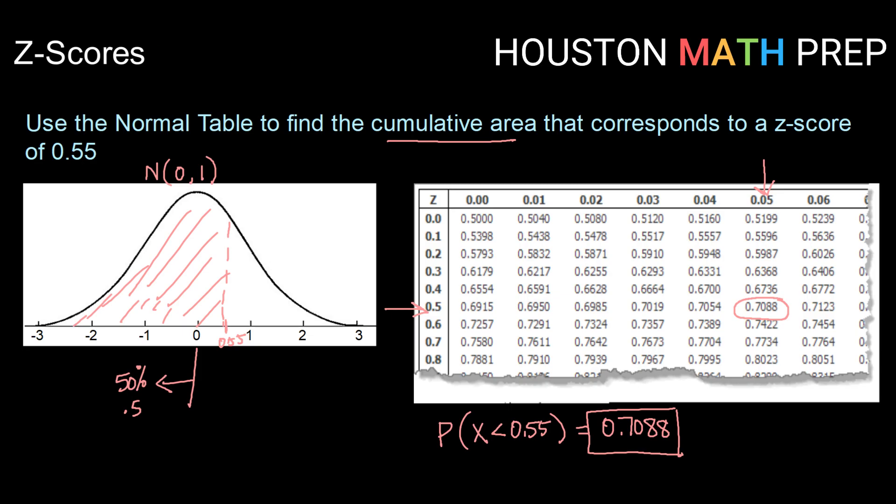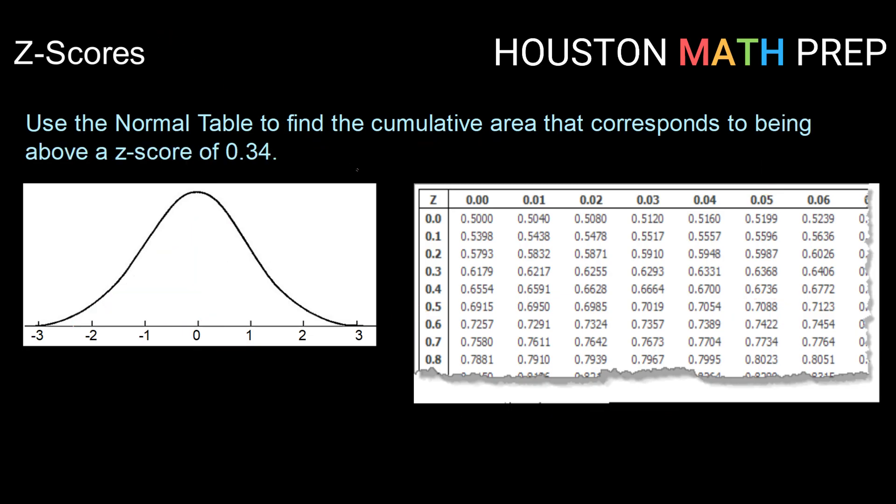All right, let's try that one more time. So same setup here. Use the normal table to find the cumulative area that corresponds to being above a z-score of 0.34.